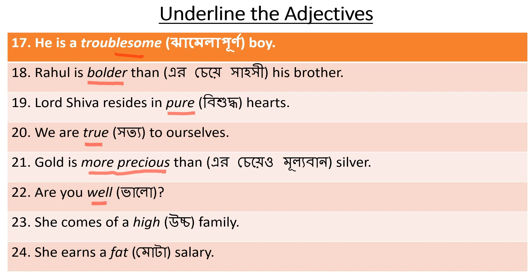Number 23: She comes of a high family. She comes from a high (uccho) family - what kind of family? High - 'high' is the adjective. Number 24: She earns a fat salary. Fat salary means a large income. She earns a fat salary - 'fat' describes the salary, so 'fat' is the adjective.